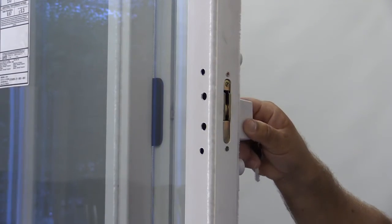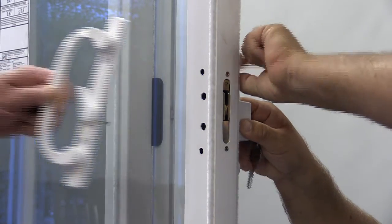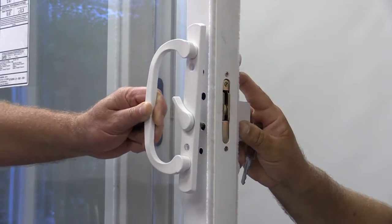Now re-attach the locking handle back to the door and attach the face plate by inserting the screw barrels and the screws.